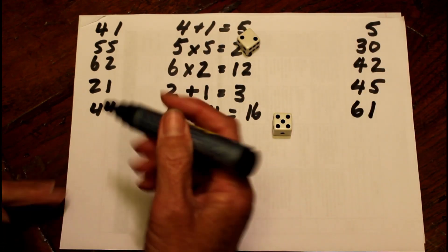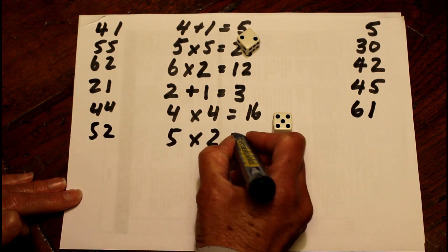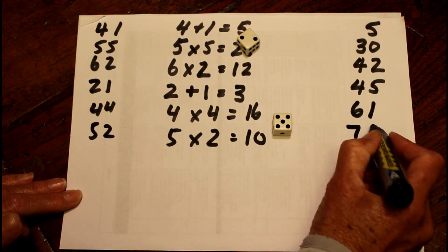I'm going to throw the dice again. I've got a 5 and a 2. So I'm going to do 5 times 2 this time to get 10. 61 plus 10 is going to give me 71.